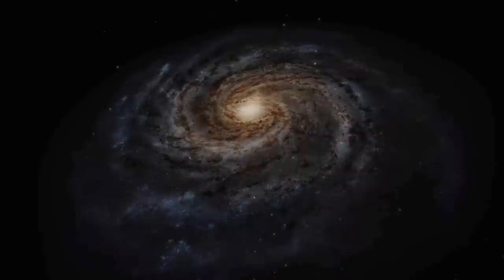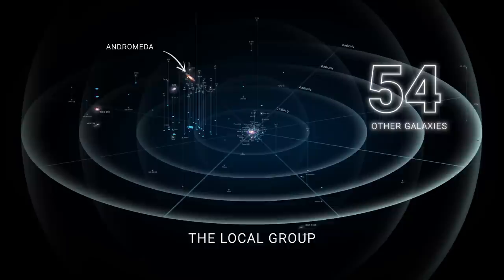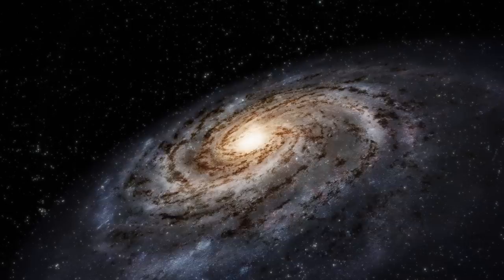But that's not all. The Milky Way is part of a group of galaxies called the Local Group, which includes more than 54 other galaxies, including our nearest neighbor, the Andromeda galaxy.